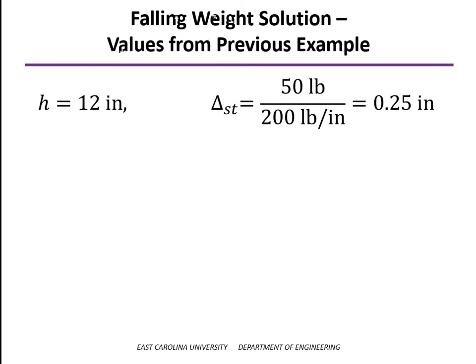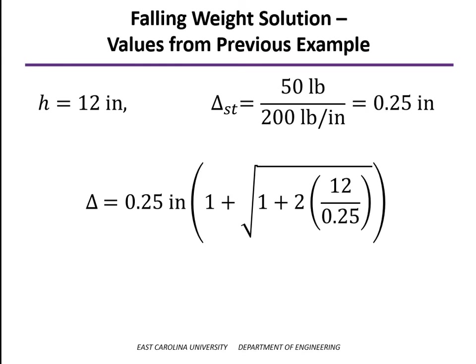So, if you plug in the values that we had earlier, the weight's 50 pounds, 200 pounds per inch for the spring stiffness. So, just under the static load of the weight, the deflection would be a quarter of an inch. And so, what we have in the brackets there, in the parentheses, is a multiplier on that, which turns out to be 10.85. So, the value of deflection by dropping the weight from 12 inches is almost 11 times greater than just setting the weight on in a quasi-static or static mode.